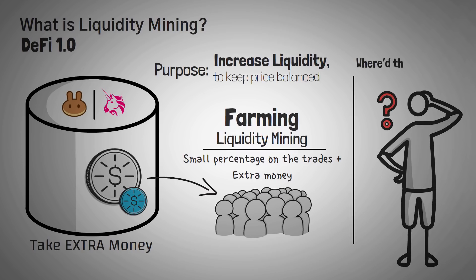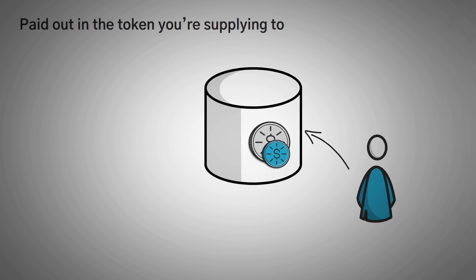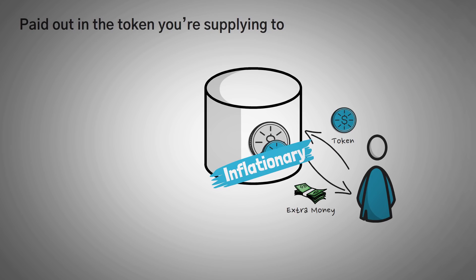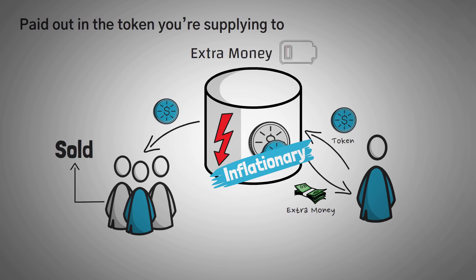But there's a problem — where did the extra money come from? The incentive is usually paid out in the token that you're actually supplying to, meaning that you would provide the token and then earn it. This means it is very inflationary, since they're giving out a bunch of tokens to a bunch of other people, and usually what would happen is that other people would earn it and then sell it, causing that specific token's price to drop. It also meant that when the extra rewards ran out, nobody would stick around because they came for the money.